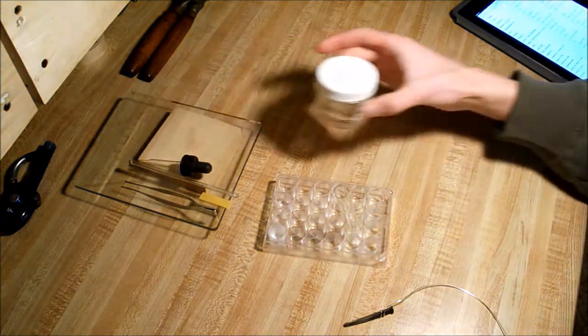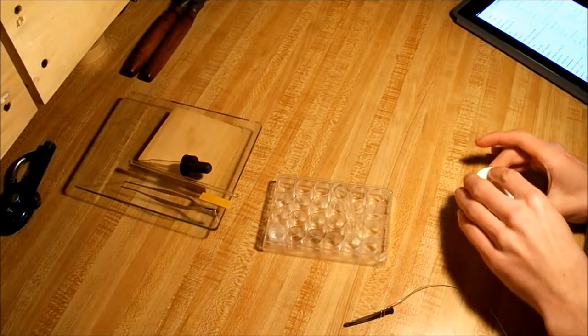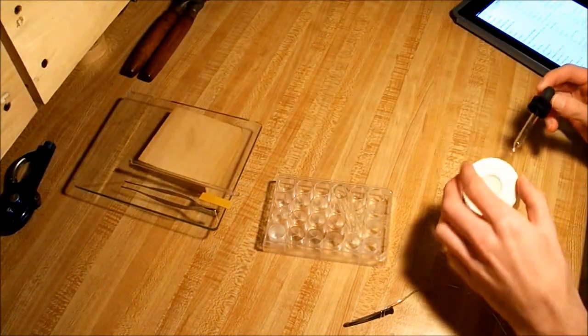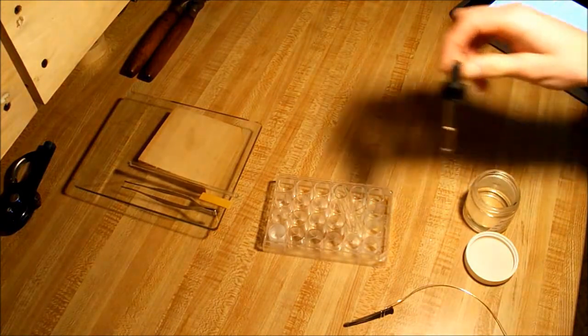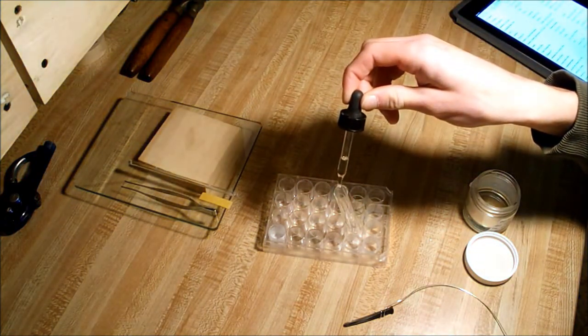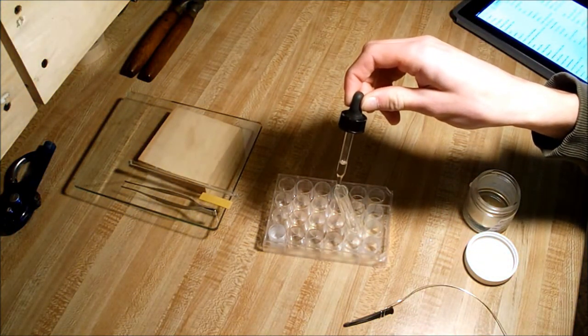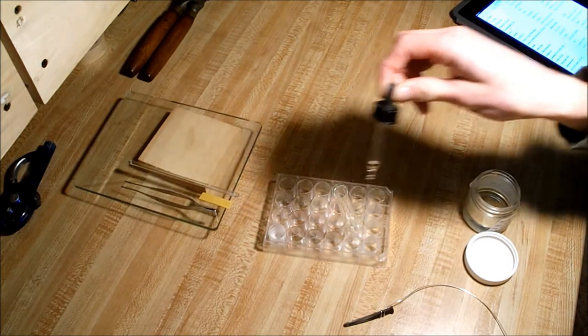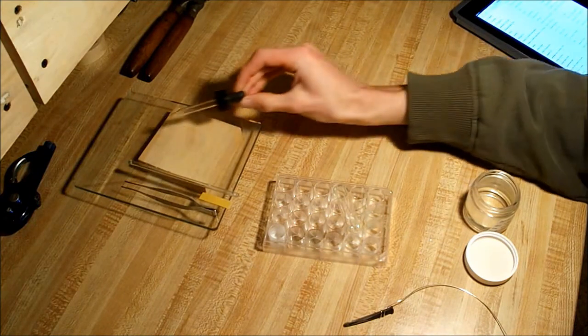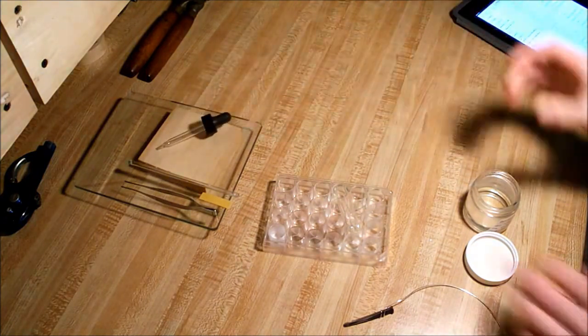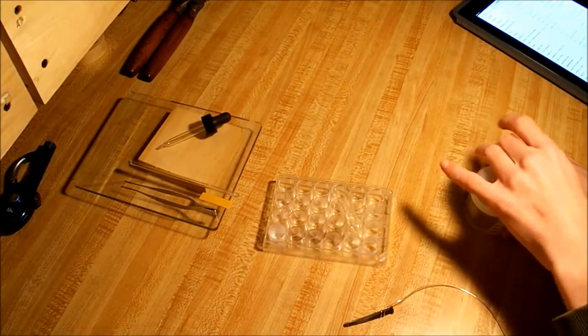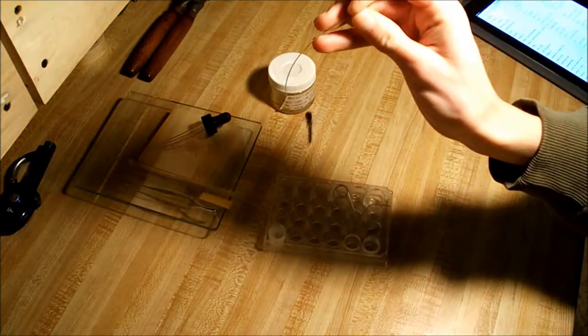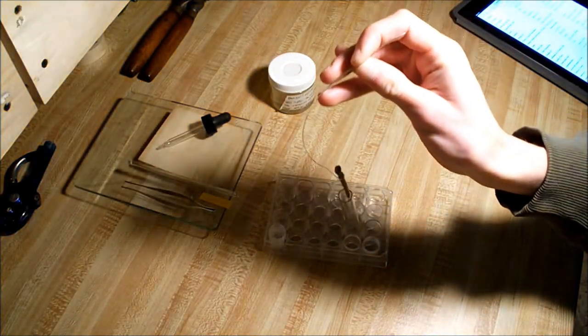Next you get your hydrochloric acid and a glass dropper or dispenser. I generally add 10 drops hydrochloric acid into the test tube. Then we place our nail into the acid solution.